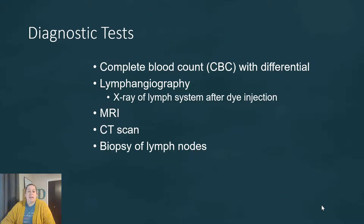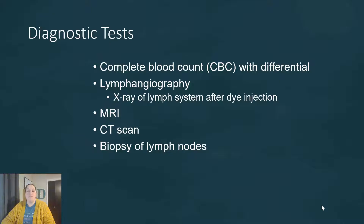Some diagnostic tests: we could do a complete blood count with a differential, specifically the white blood cell differential. We could also do a lymphangiography — this is where we take an x-ray of the lymph system but we have to use dye injected through those vessels in order to get a good picture. We also see that you could use an MRI or CT scan, and also taking biopsies of the lymph nodes is important, especially when we talk about certain types of cancer, because the lymphatic system ends up being a highway that cancer cells can take and travel to far-off places when it metastasizes.